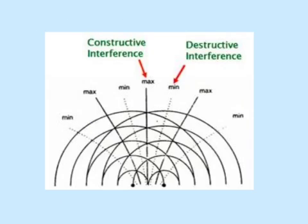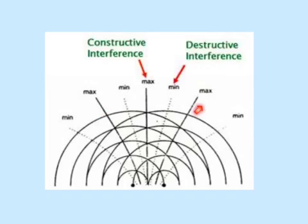Let's take a closer look at a two-point source interference pattern. As you can see, there are places along these solid lines where there is constructive interference — we call them maxima. At other places, like these dotted lines, there is destructive interference, and we call them minima.